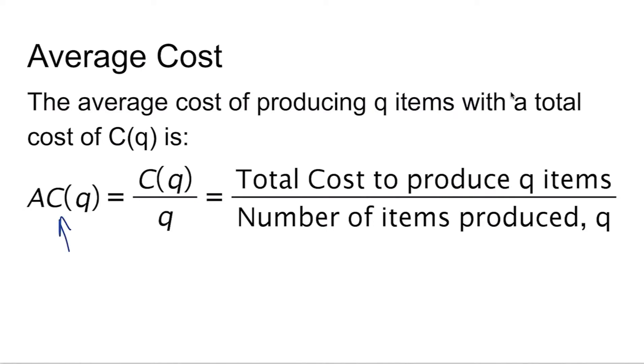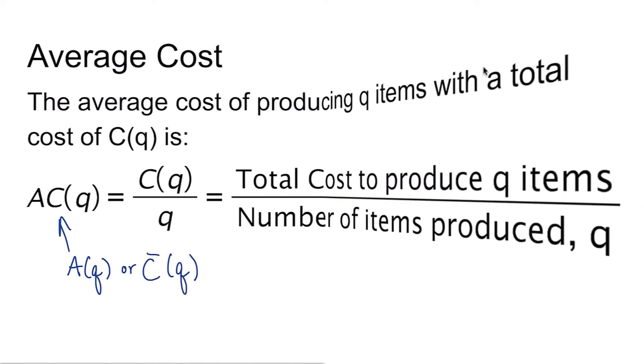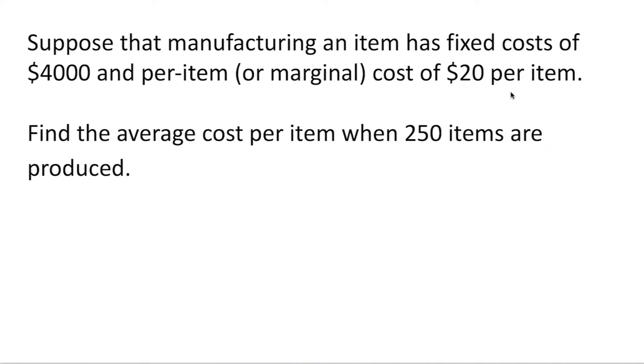The average cost function is also written as A(Q) or sometimes C bar of Q. Let's look at an example. Suppose that manufacturing an item has fixed costs of $4,000 and a per-item or marginal cost of $20 per item.